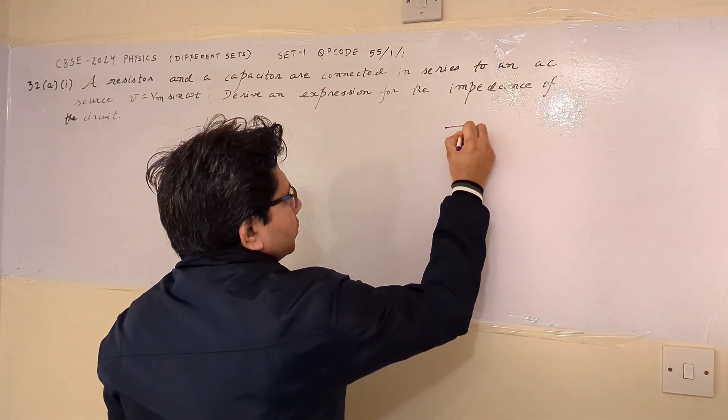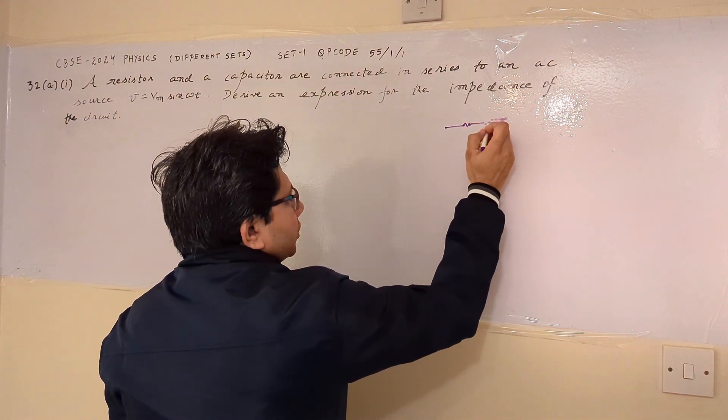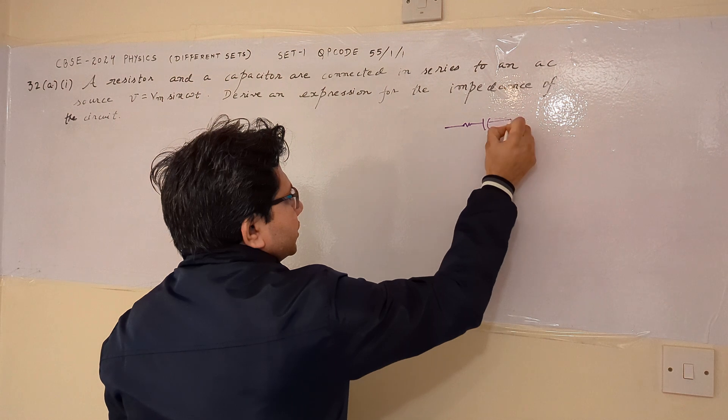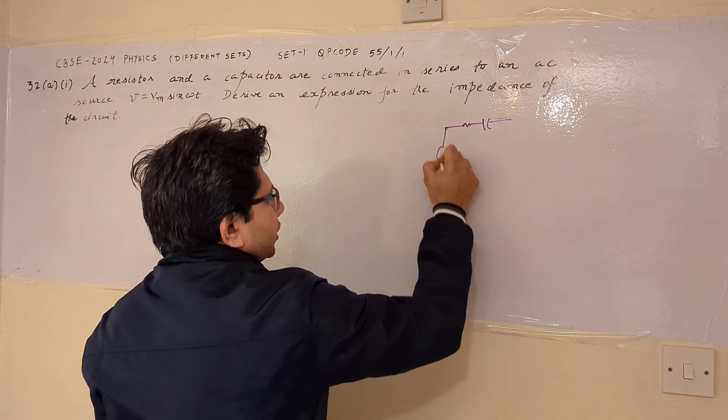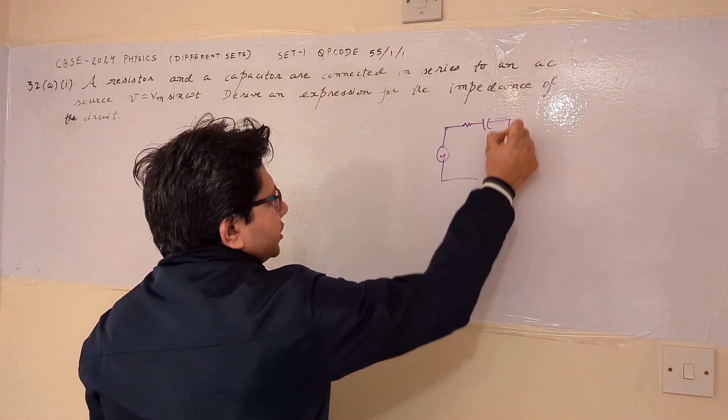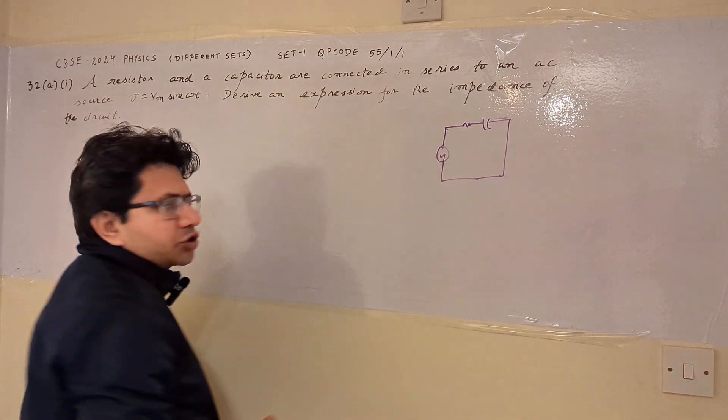Now the circuit consists of a resistor in series with a capacitor energized by an AC source. So this is the situation.